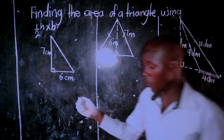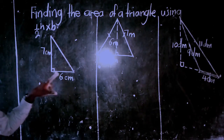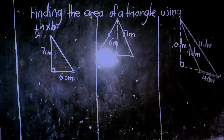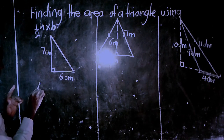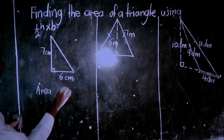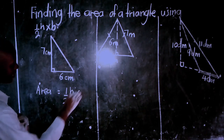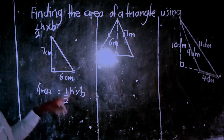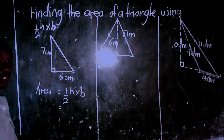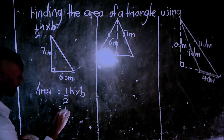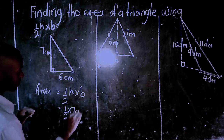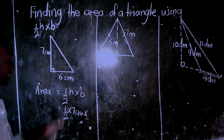On my first triangle, the right triangle, the base is measuring 6 centimeters and my height is measuring 7 centimeters. So in my formula, area is a half of height times base. I substitute in: this is a half times my height of 7 centimeters times my base of 6 centimeters.